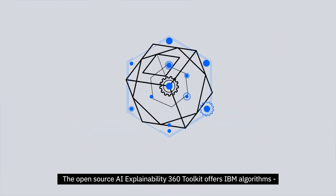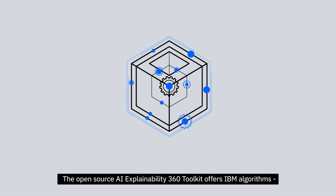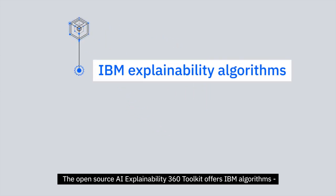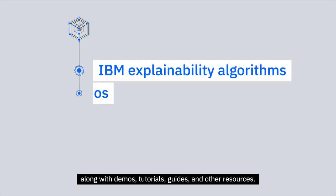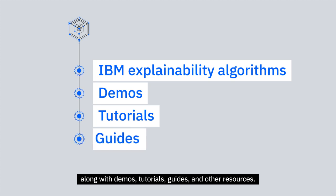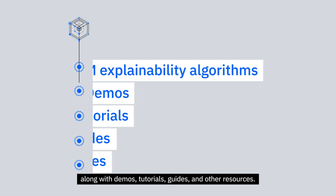The Open Source AI Explainability 360 Toolkit offers IBM algorithms, along with demos, tutorials, guides, and other resources.